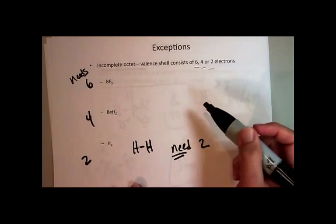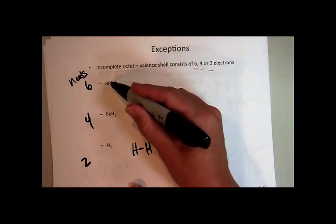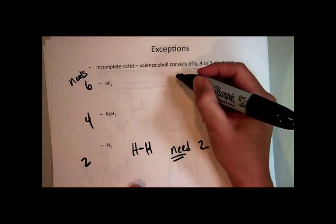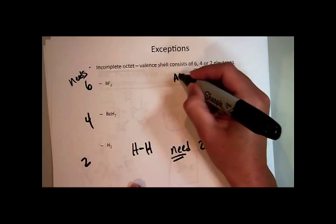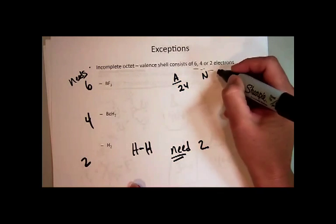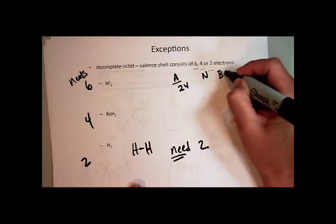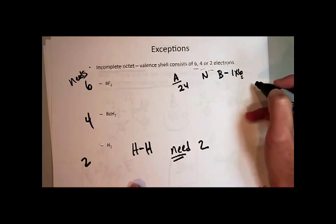You can predict the bonding in this by doing the S equals N minus A rule. The available number of electrons here in this case is 24. The needed, this is where you have to be careful. Boron only needs six. There's one of them, so instead of putting eight here, you just put a six.